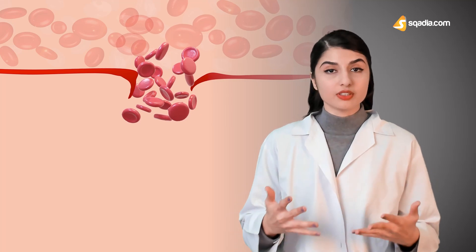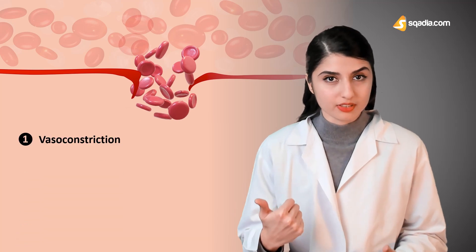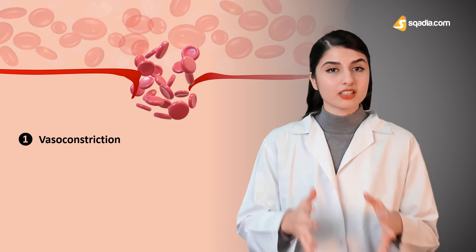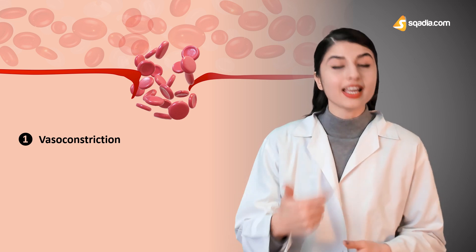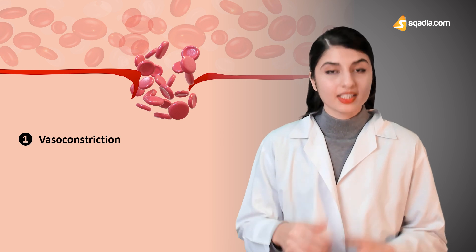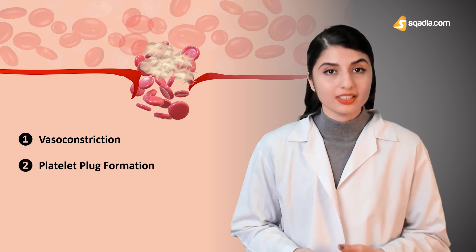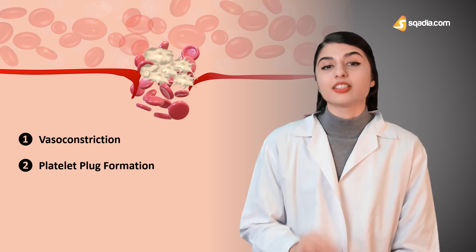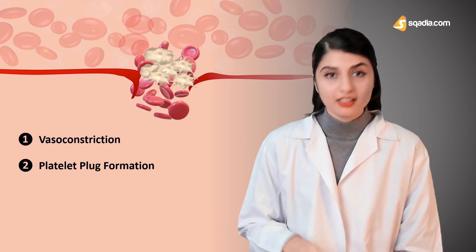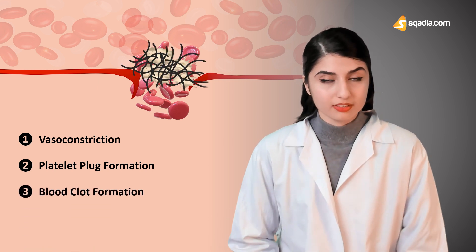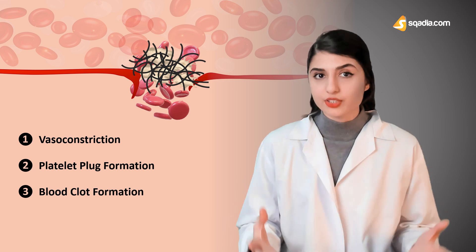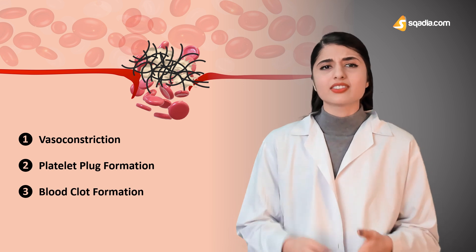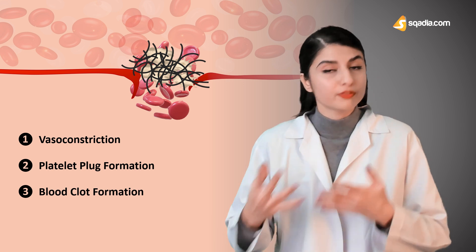The immediate action was vasoconstriction, which was the first step to reduce the flow of blood. It is mainly mediated by autocoids, namely endothelin and thromboxane. Then we have platelet plug formation occurring via three steps: platelet adhesion, activation, and aggregation. Thirdly, blood clot formation involves the coagulation cascade that triggers thrombin activation, which acts as scissors to cut fibrinogen into fibrins.